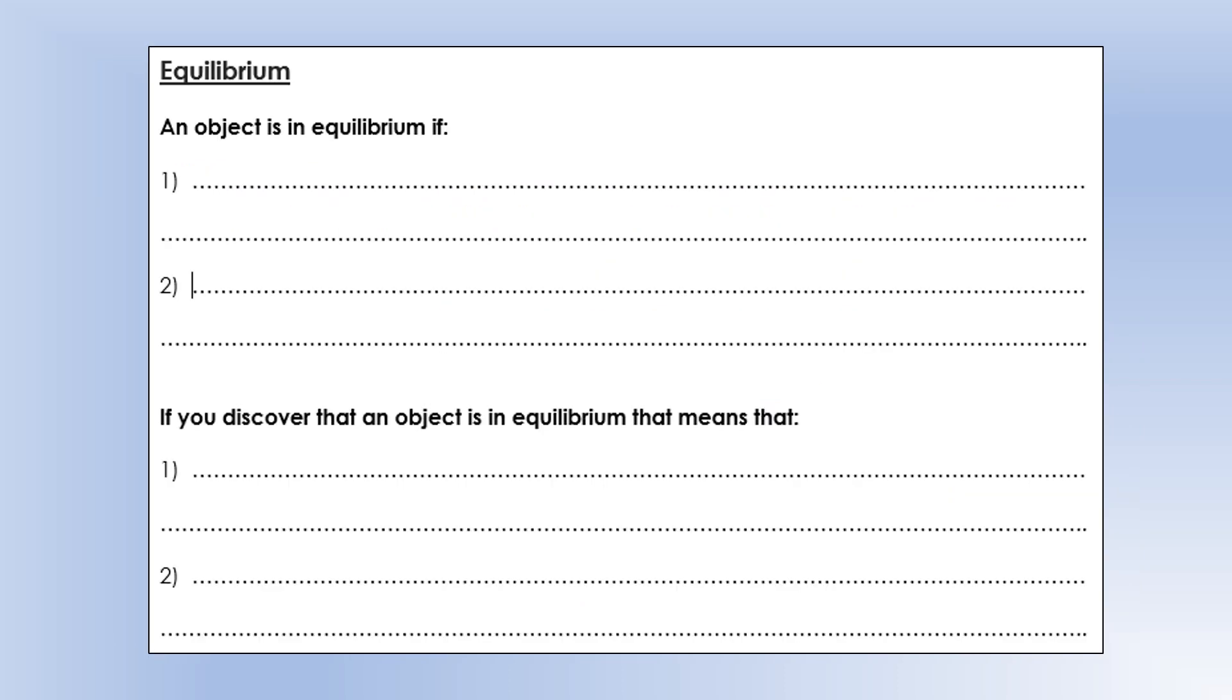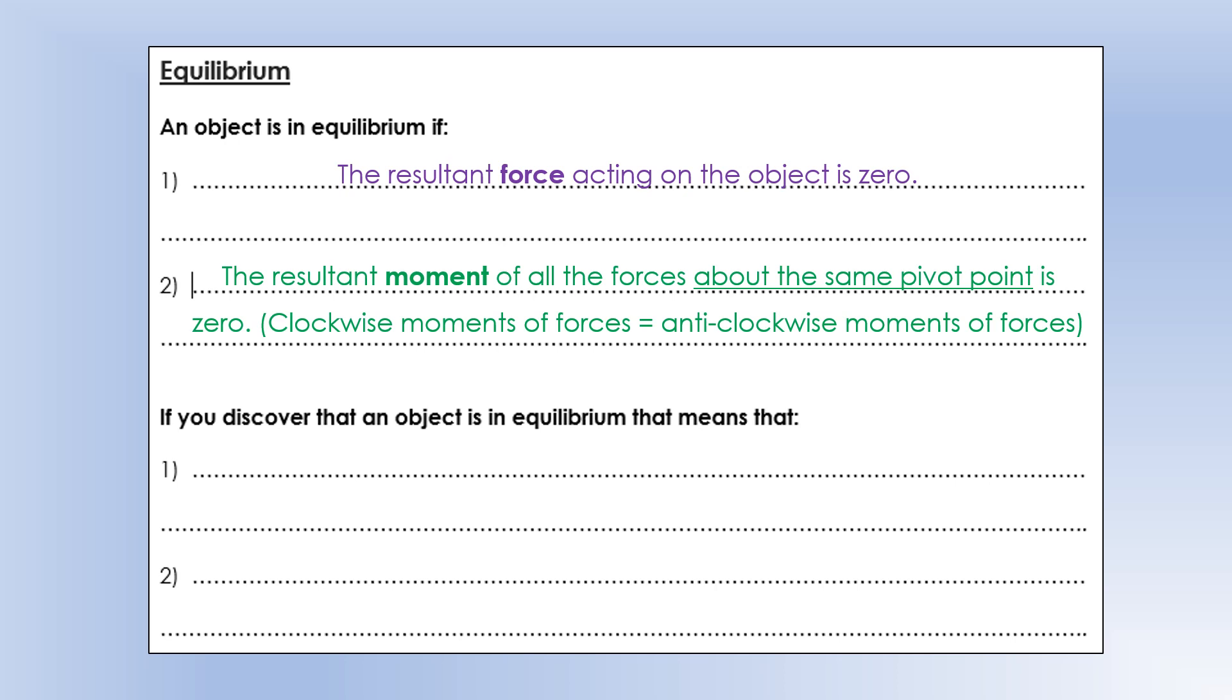Okay, so this kind of brings us on to what we call the conditions of equilibrium. So there are two conditions of equilibrium. The first one is the resultant force has to be zero. It doesn't matter whether there are no forces or all the forces are balanced. If the resultant force is zero, that's one condition to be in equilibrium. And the second one is that the resultant moment, about the same pivot point, is zero. Or another way of saying that is the clockwise moment equals the anticlockwise moments of forces. So if these two conditions hold, or are true, we describe an object as being in equilibrium.